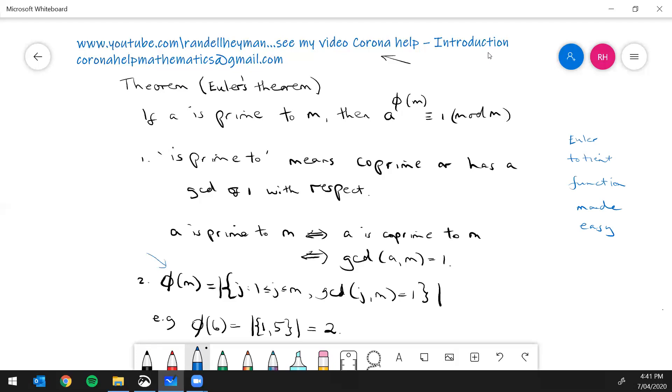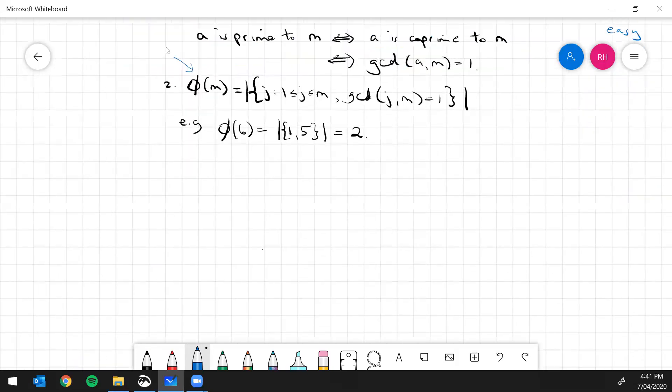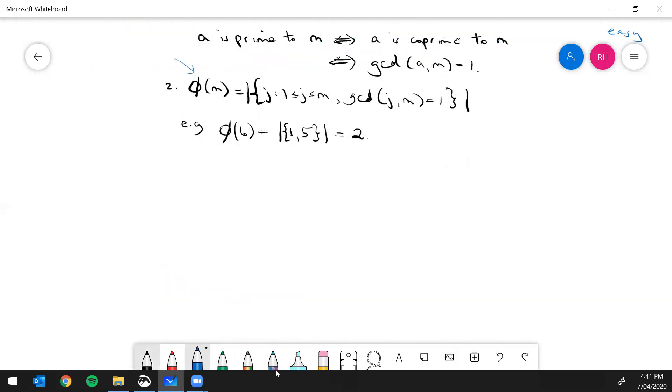Okay right so that's good and then I just want to make mention of this three at the end of that line there: a to the power of the Euler totient function of m is equivalent to one mod m.